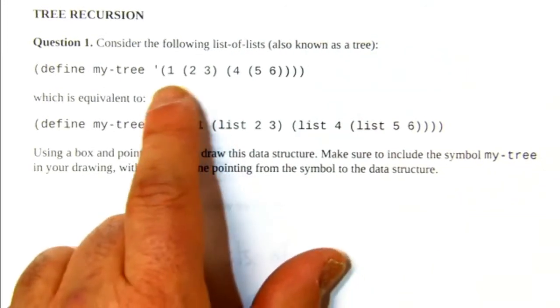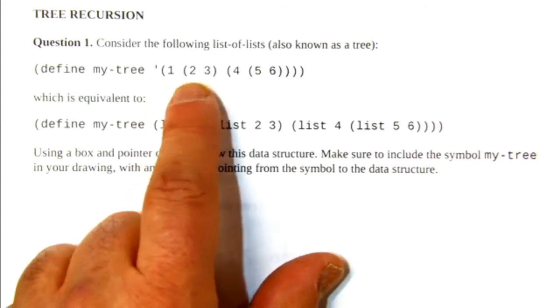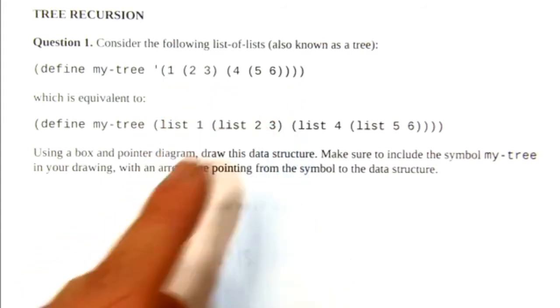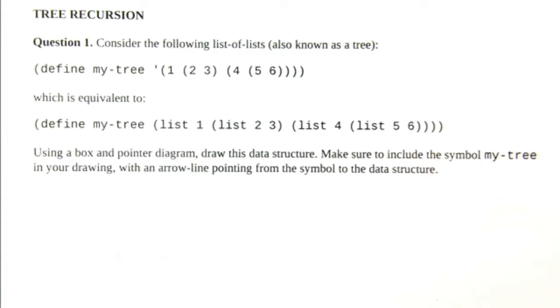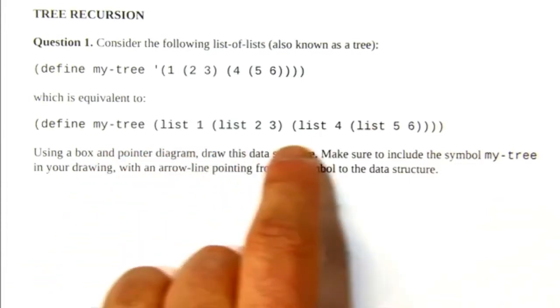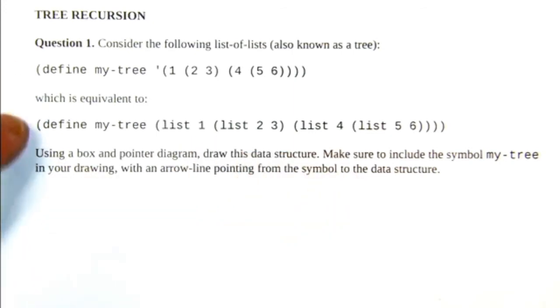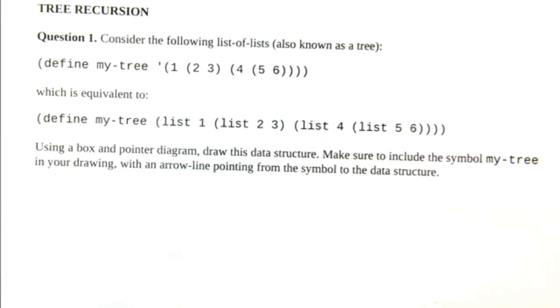I'm going to give you a tree, which is a list of lists. Just to help reinforce that the quote versus Scheme, like actual primitives, these two representations are equivalent and they will produce an identical structure, assuming I haven't made any errors. I think it's right.